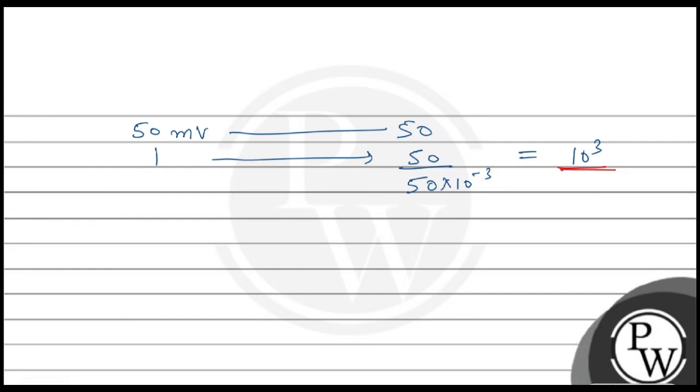So we will simply calculate R from here. R will be current sensitivity - that is given in the question as 2 division per milliampere, which is 2 into 10 to power 3 - upon voltage sensitivity 10 to power 3. So we get R equals 2 ohm. So the final answer is option A.